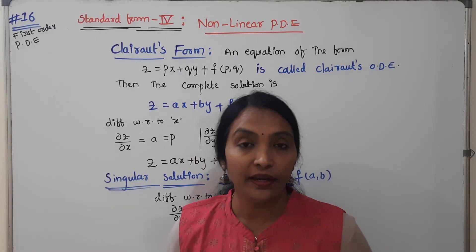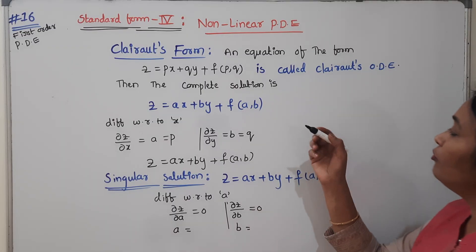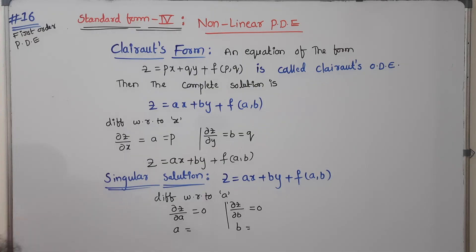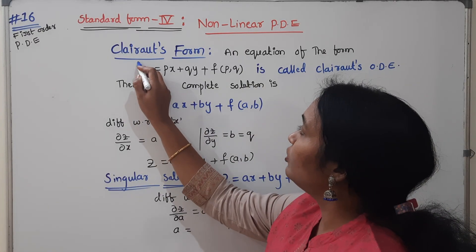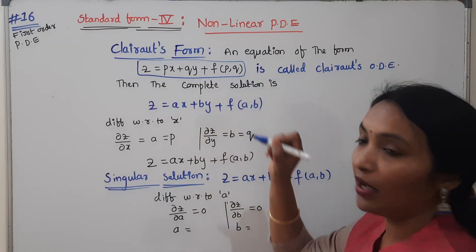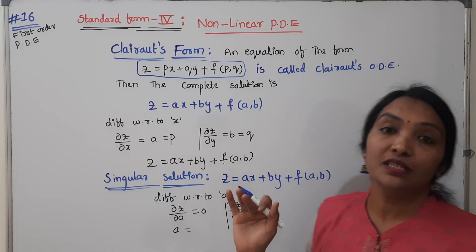Clairaut's equation: we identify all the equations. If the equation is of the form Z equals PX plus QY plus F of P, Q, then we conclude this is Clairaut's form.